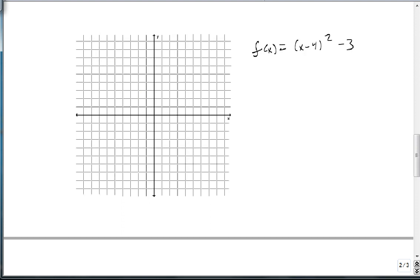For our final piece, suppose we have f of x equals x minus 4 squared minus 3. Again, this is already negative 4, so this means h is 4, but k is negative 3, so we come over 4, and down 3. There's our vertex.